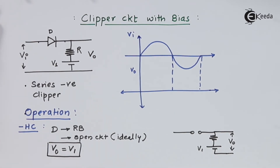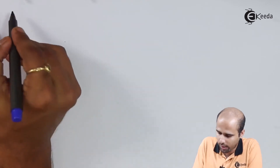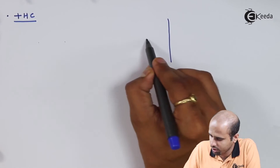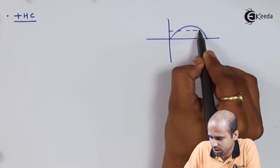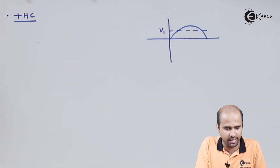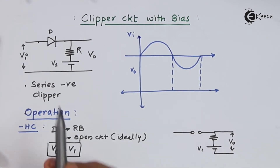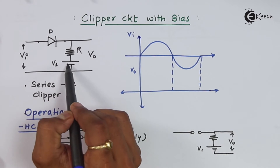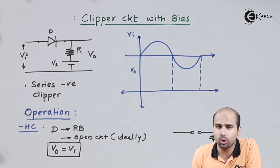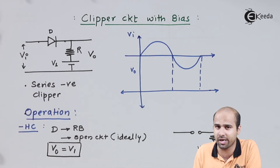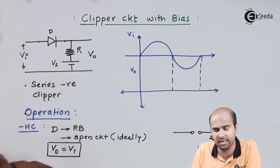Let's come to the positive half cycle. I will divide the positive half cycle into three parts. This is my input waveform and let us suppose V1 is a positive value. Keep in mind that as I am applying V1, the cathode voltage is nothing but V1, and V1 is a positive value. So even though the anode voltage is positive, if it is less than V1, the diode will not conduct. The diode will become reverse biased when the input voltage VI is less than V1.